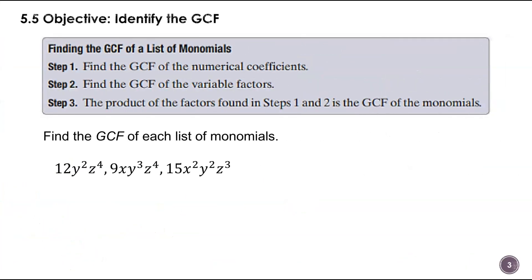Next. There is a way where you could write this all out as multiplication; most students don't need this. But let's look at 12, 9, and 15 — what's the largest number that will divide into all three? That happens to be 3. So 3 is the greatest common factor of the coefficients.